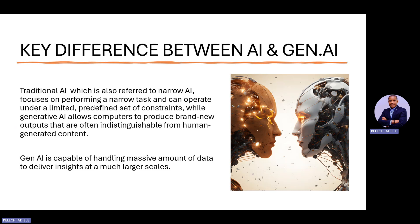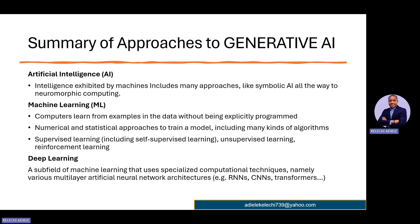Now let's summarize the approach of generative AI — the fundamentals of what generative AI is made up of. I'll call these the pillars of generative AI. First is AI itself — intelligence exhibited by machines. The second is machine learning. Machine learning basically means computers learn from samples and data without being explicitly programmed — a mathematical and statistical approach to train a model, including many kinds of algorithms: supervised learning, self-supervised learning, unsupervised learning, and reinforcement learning.